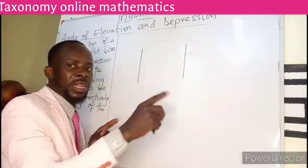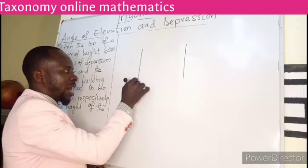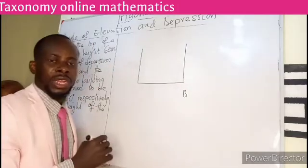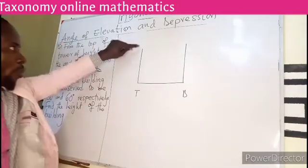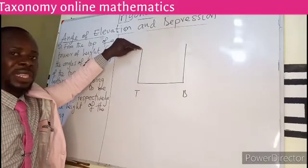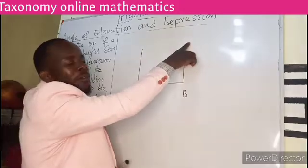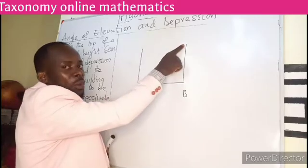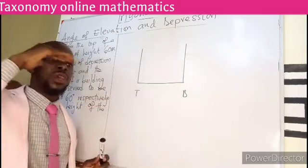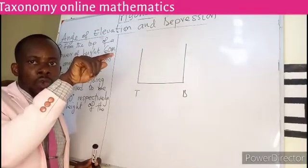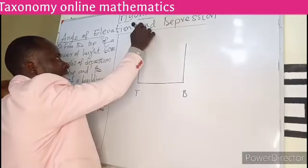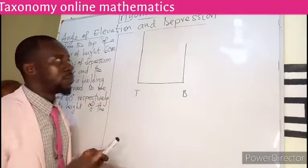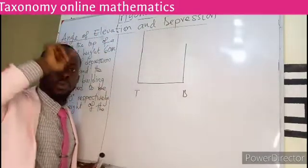The tower and the building are going to be on the same level ground. If I draw this being the ground, this could be my building and this could be my tower. Now, they said at the top of the tower you are viewing the top and the bottom of a building. The tower must be taller than the building before I can be able to see the top of the building.